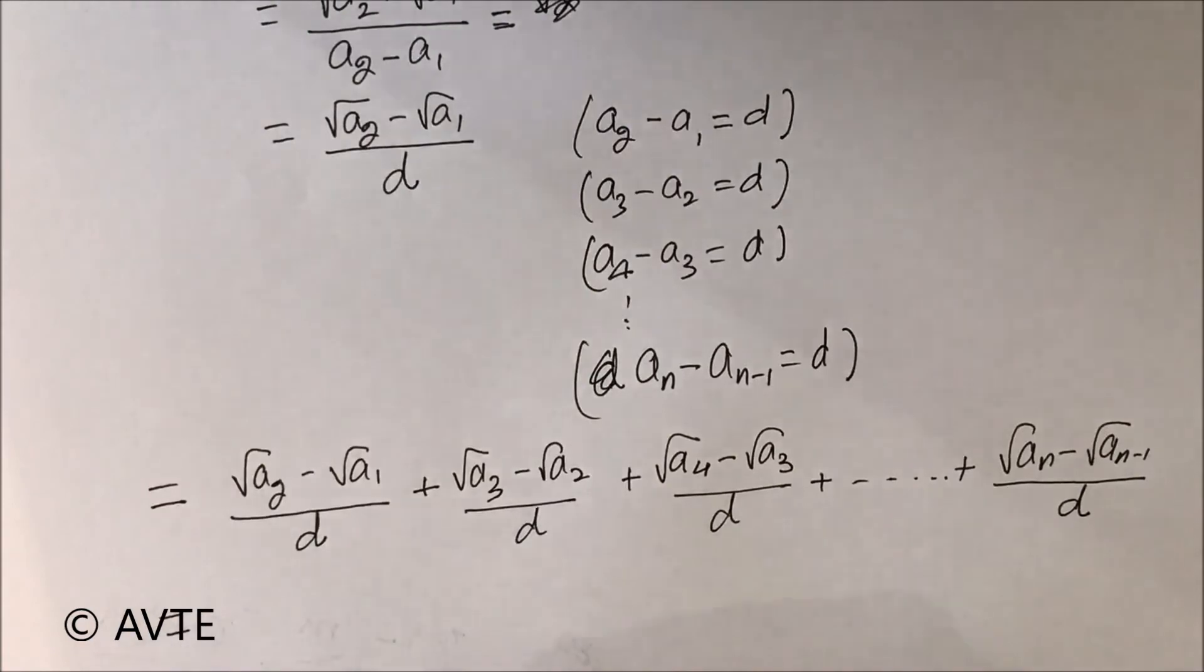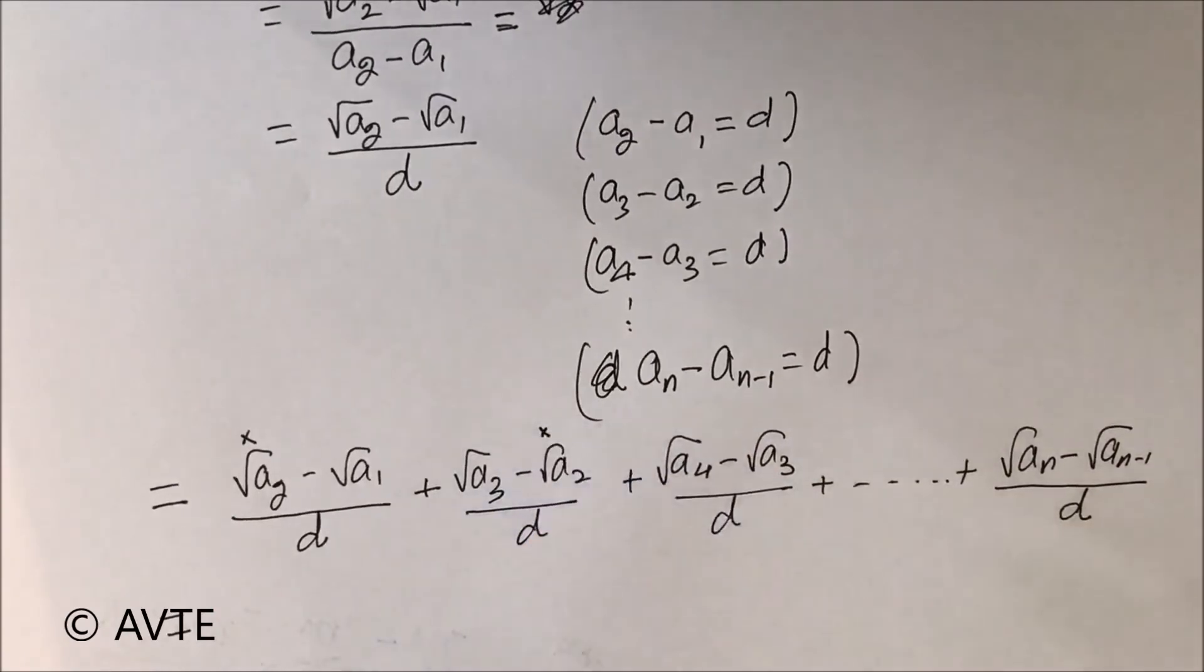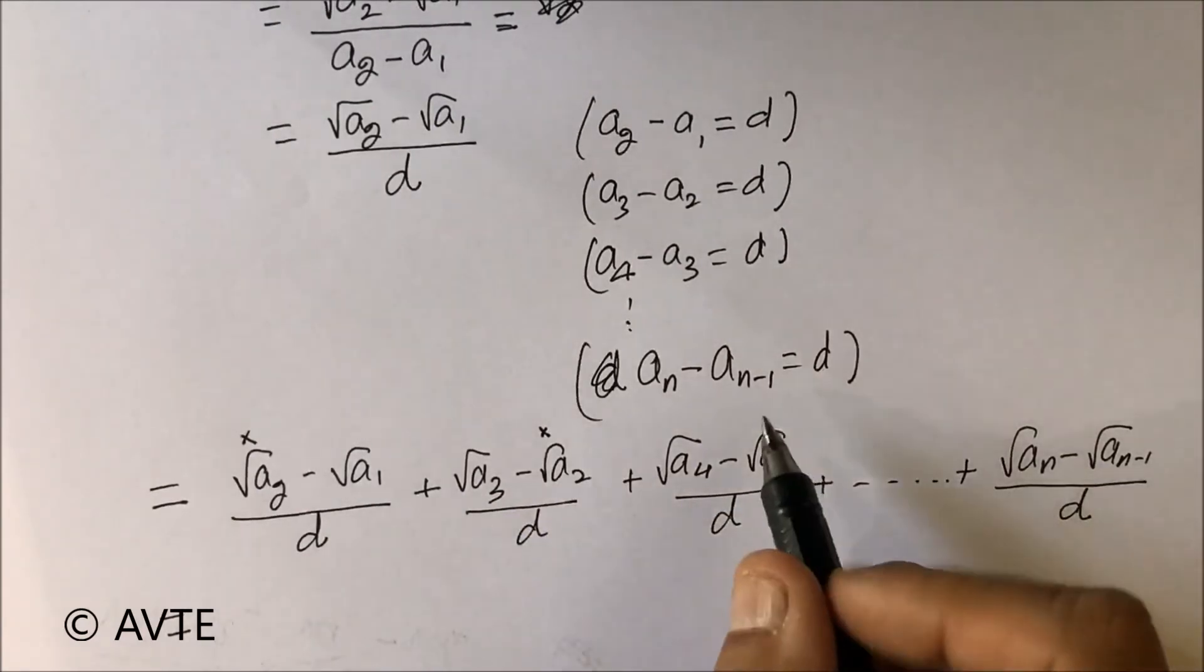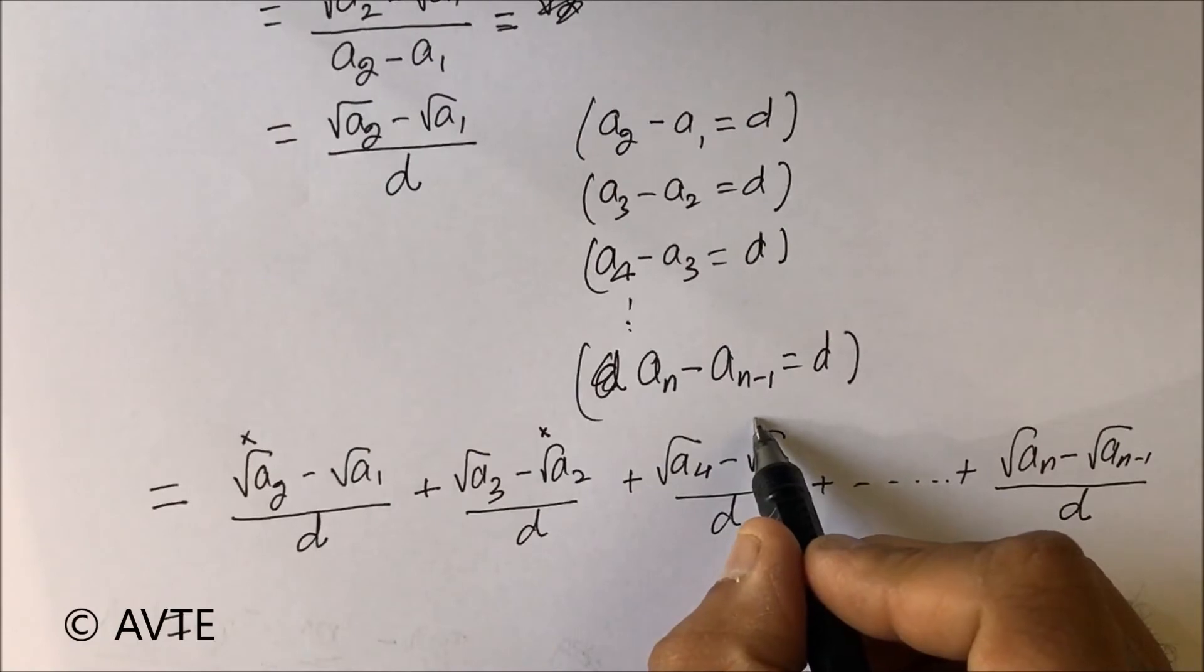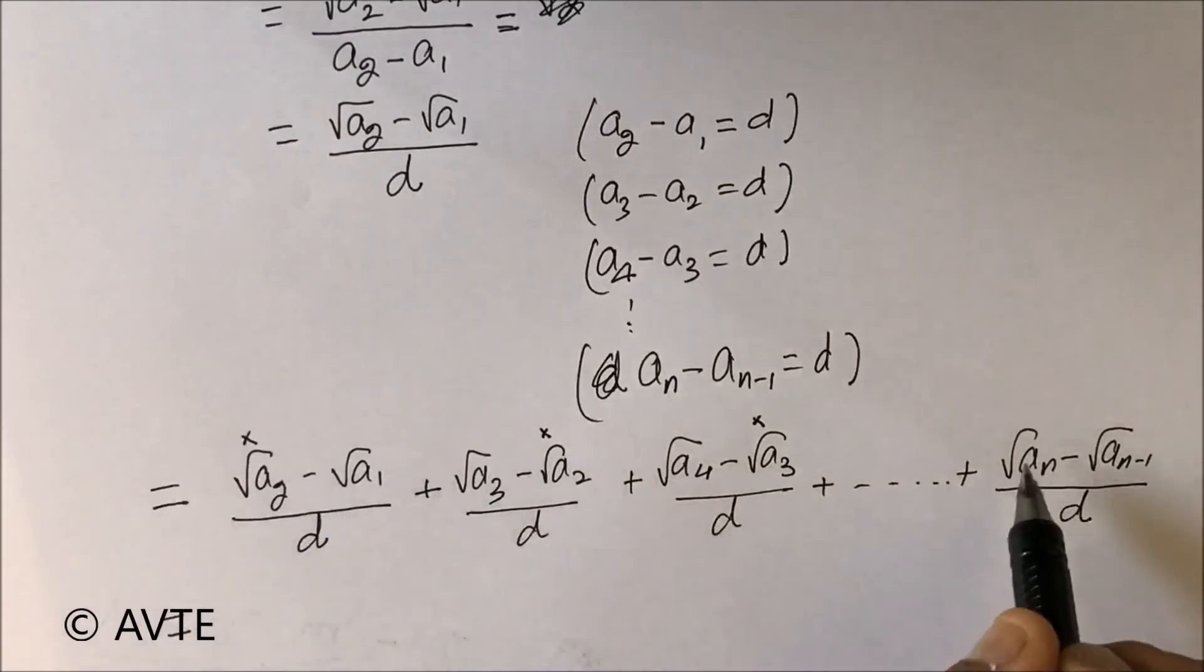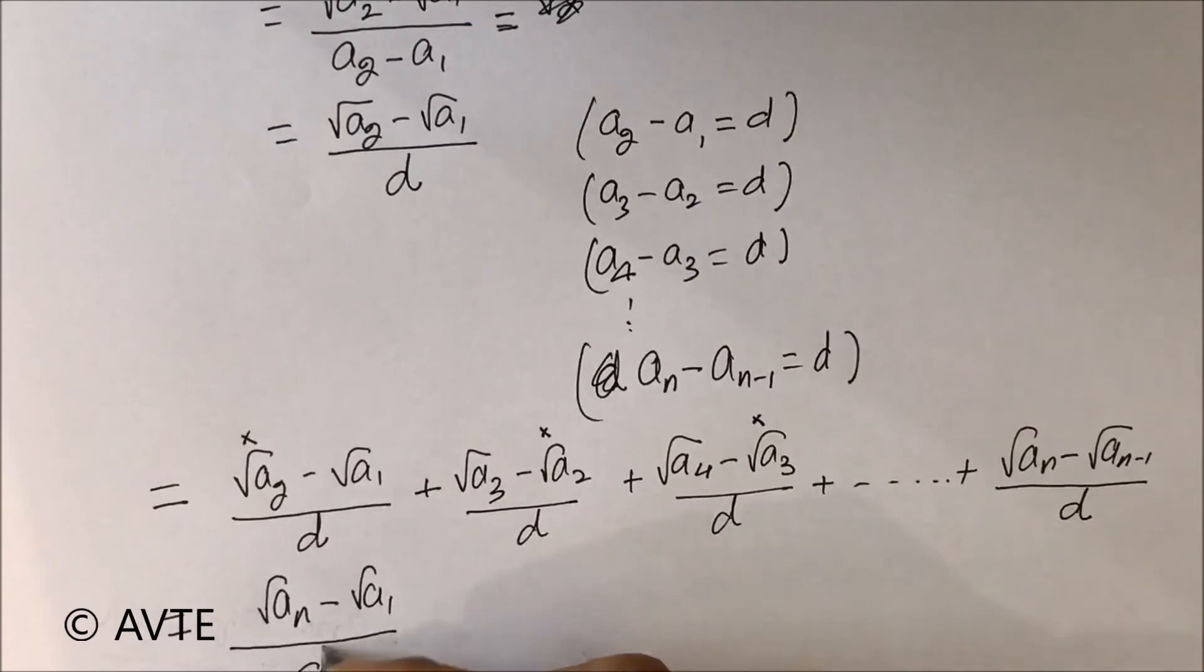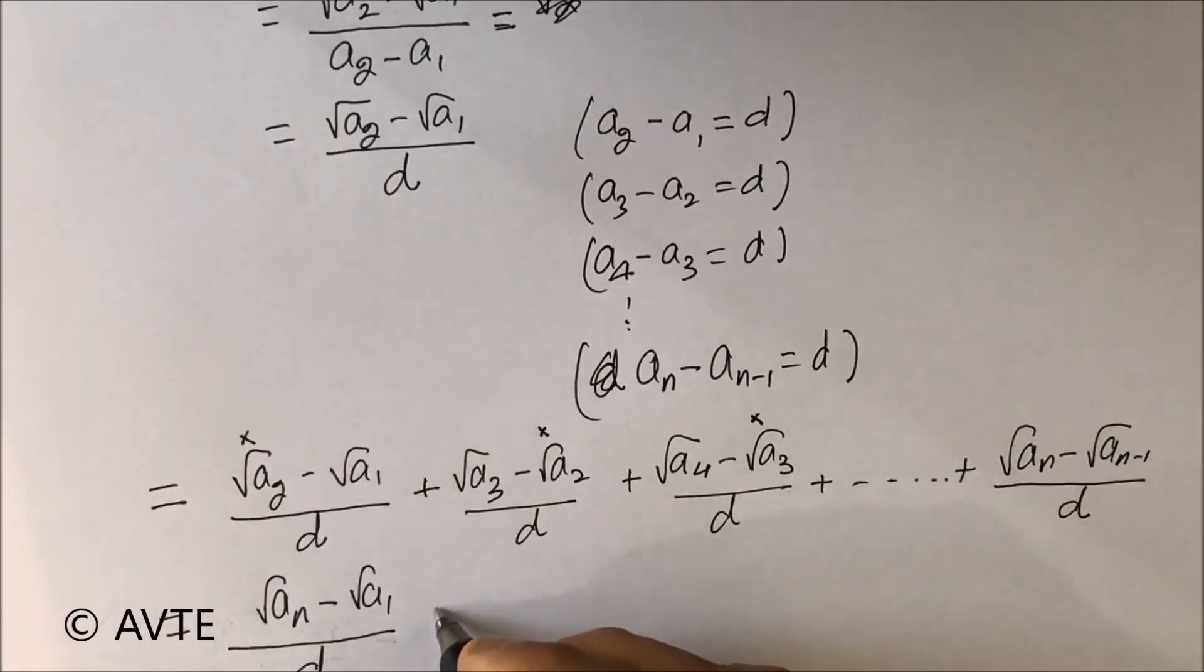We can write the second term. Can you see that this first term can easily be cancelled with the fourth term, they being additive inverse? Similarly, this √a₃ will be canceled with its next fourth term. So we'll be left with the second and second last term, which is now again rationalizing it.